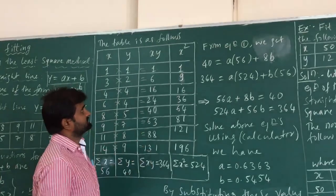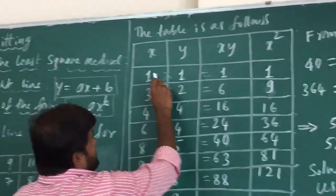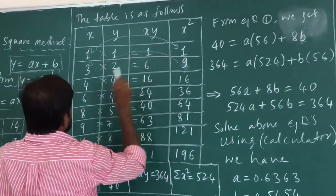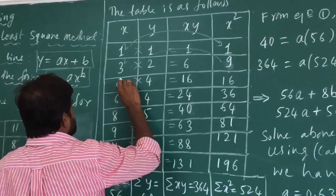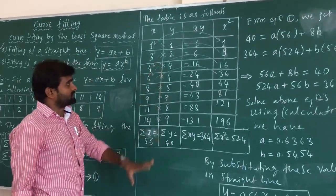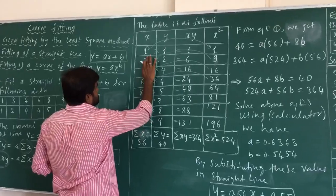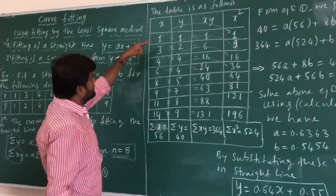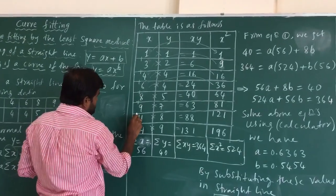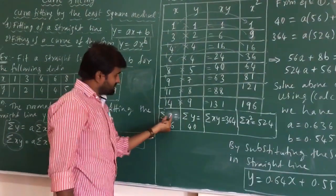Next we need x². Computing x² for each value: 1²=1, 3²=9, 4²=16, 6²=36, and so on. Summing x: 1+3+4+6+8+9+11+14 = 56. Sum of y: 1+2+4+4+5+7+8+9 = 40.